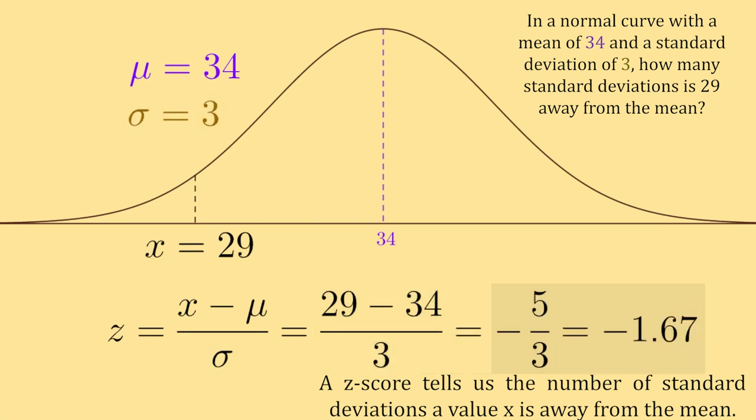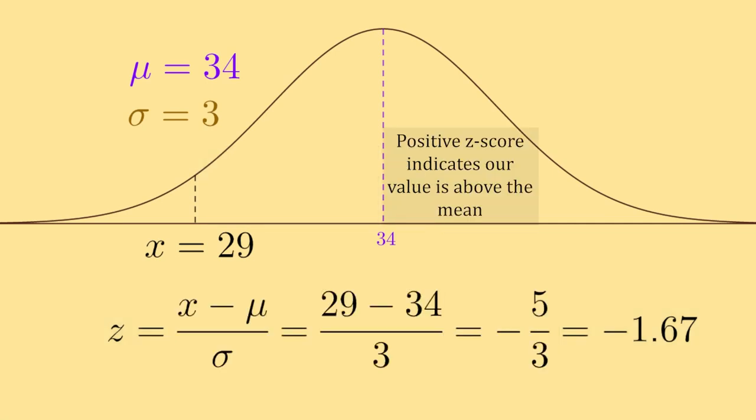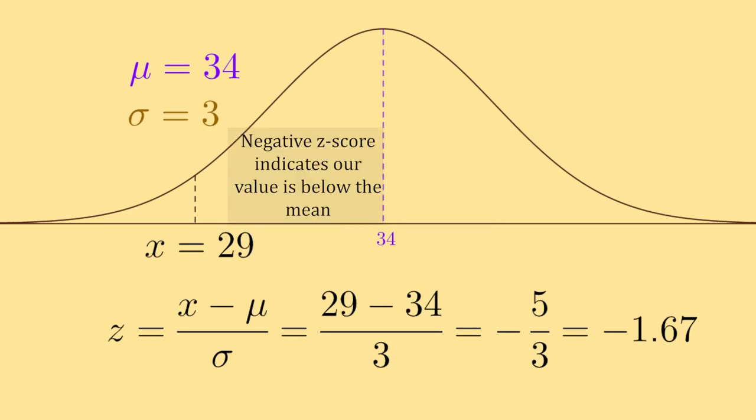So our z-score here is negative 1.67, which tells us that 29 is negative 1.67 standard deviations below the mean. So z-scores are a measurement of how many standard deviations we are away from the mean. If it's positive, that's how many positive standard deviations we are above the mean. And if it's negative, that's how many negative standard deviations we are below the mean.